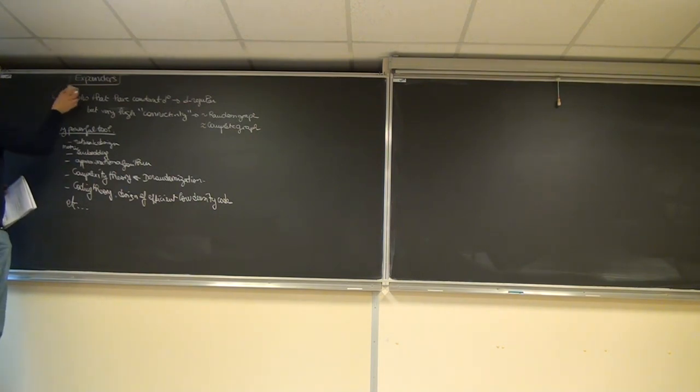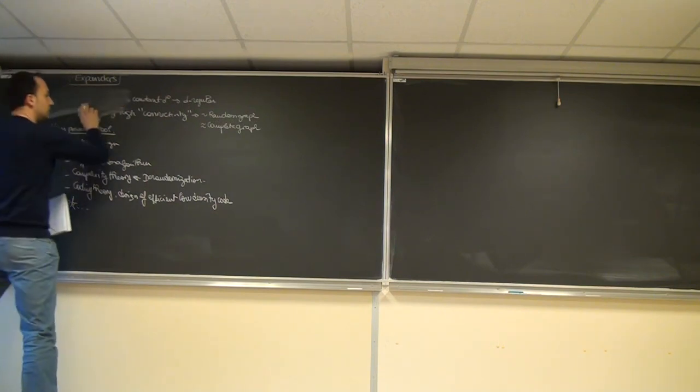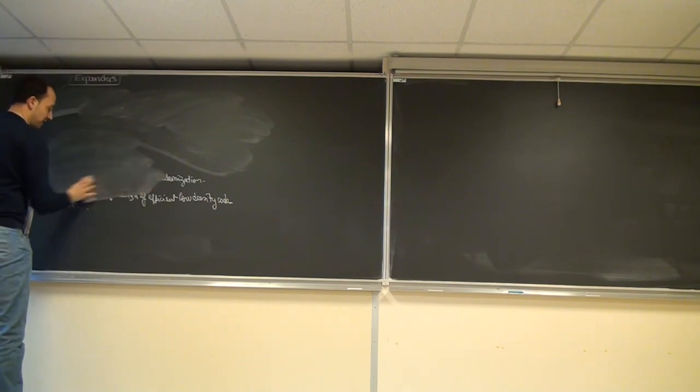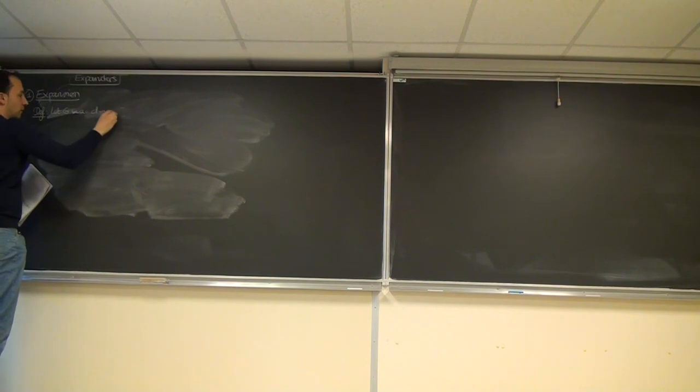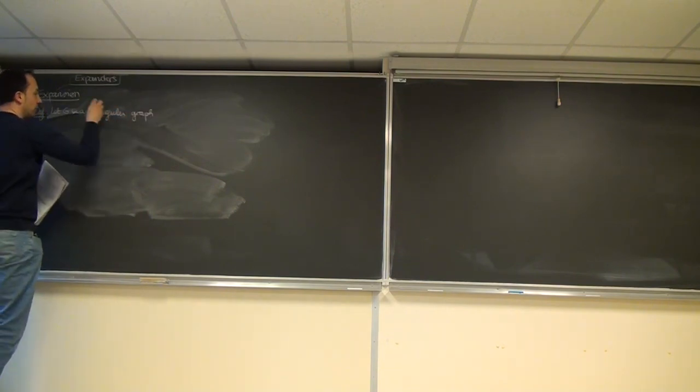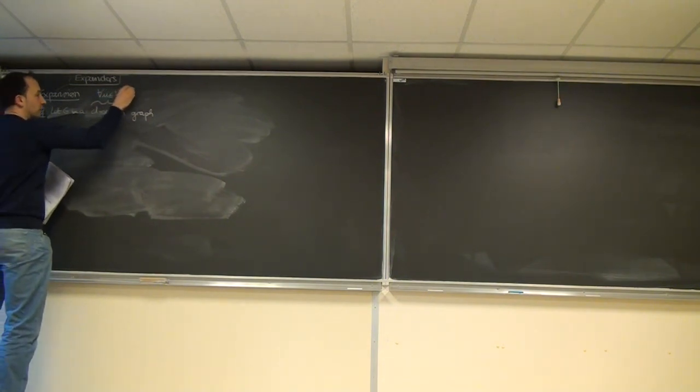So let's now first define what I mean by expander. In order to define what I mean by expander, I will define what we mean by expansion — what is the expansion of a graph. So the expansion of a graph is its ability to spread its edges to every part. And this is captured by the following definition. So let G be a d-regular graph, meaning that for all vertices u, the degree of u is d, where d is a fixed constant. All graphs we consider in this lecture will be d-regular.